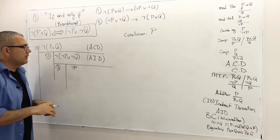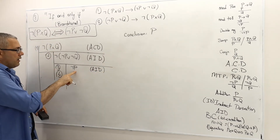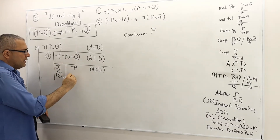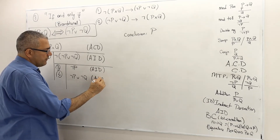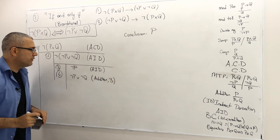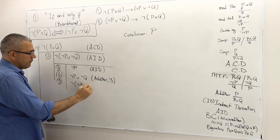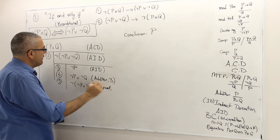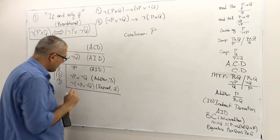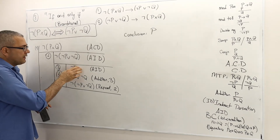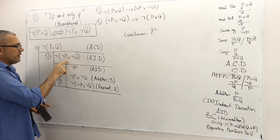Suppose not P is true. I add another sentence — not P or not Q — using the addition rule applied to line three. Then I repeat not P or not Q from line two. Now I have a contradiction. That means the assumption not P is a false statement, given that the assumptions in lines one and two are true.